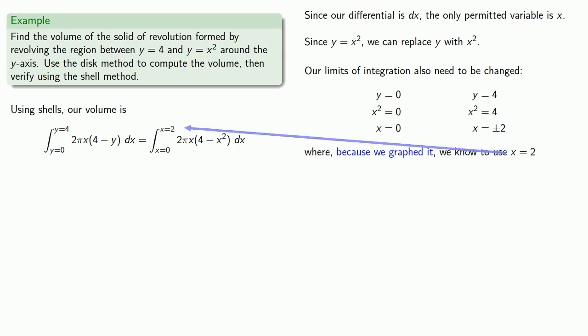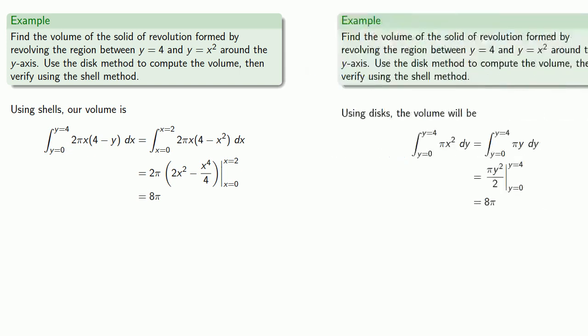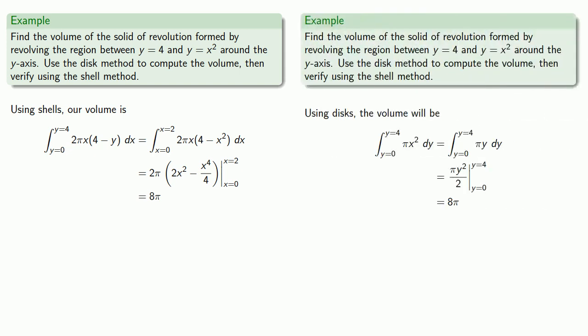And this gives us a definite integral where everything is in terms of x. So let's integrate, and evaluate, which gives us the volume using shells, 8 pi. And we see that this is the same volume that we got before, which is something of a relief because we don't want to get two different volumes for the same object.